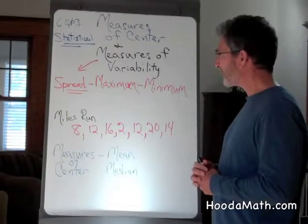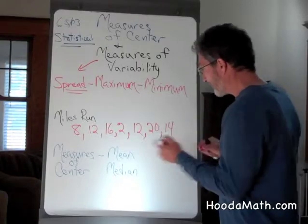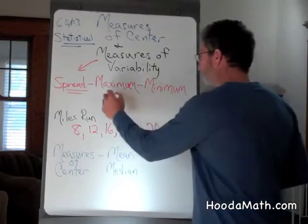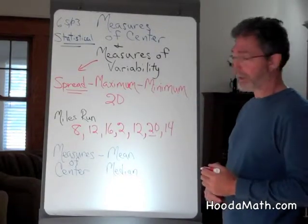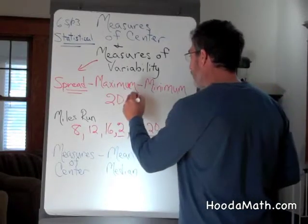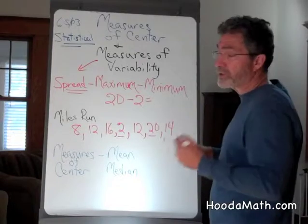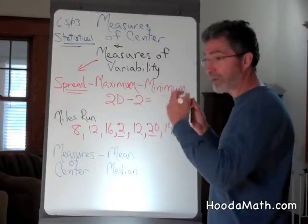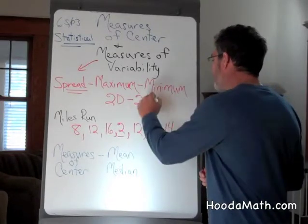Which day did she run the biggest distance? Well, she ran 20 miles — that was the longest she ran. And the shortest distance she ran was 2 miles. So the spread, which is the measure of her variability from the day she ran the farthest to the day she ran the shortest distance, was 18 miles.